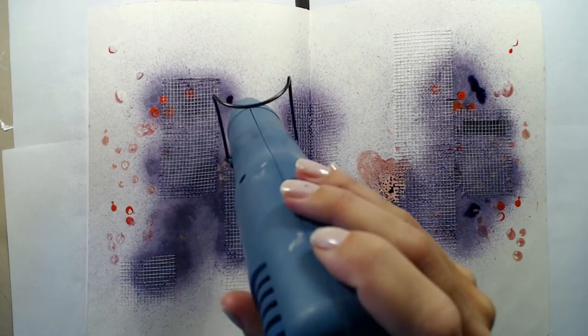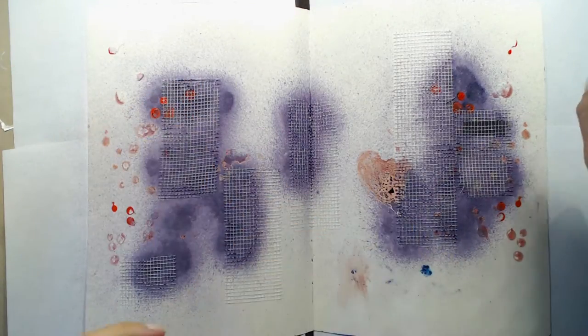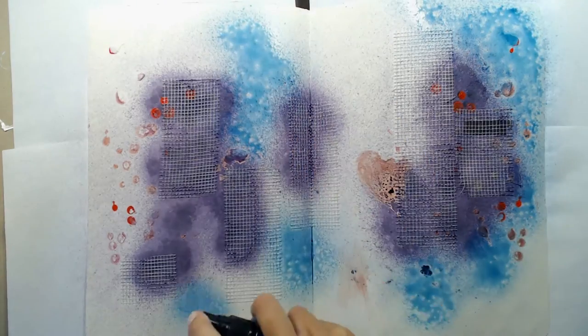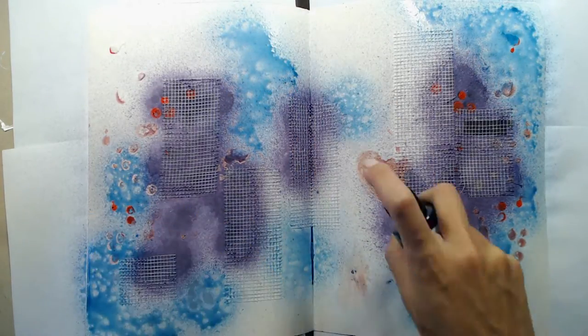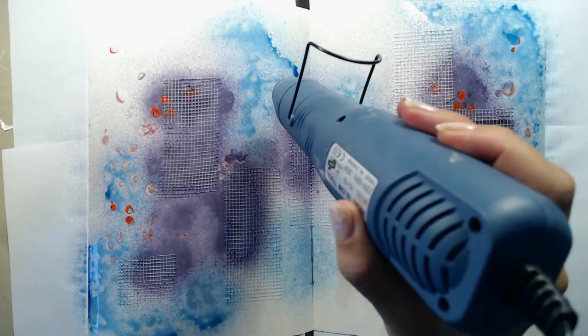Then I am drying the ink with my heat gun before I continue. Last time I used these spray inks I had trouble getting them to dry, so this time I am making sure to dry them well before adding any more layers. After the purple color here is dry, I also went in with a light blue ink and spray that around the purple.